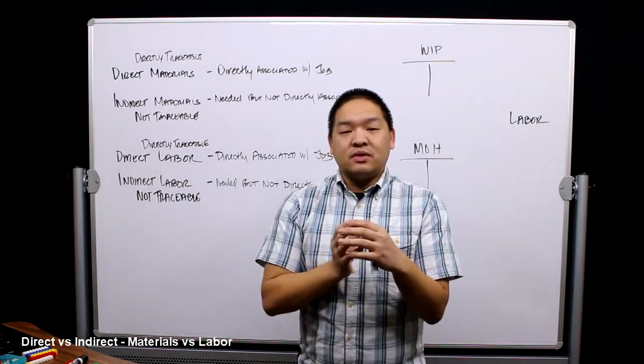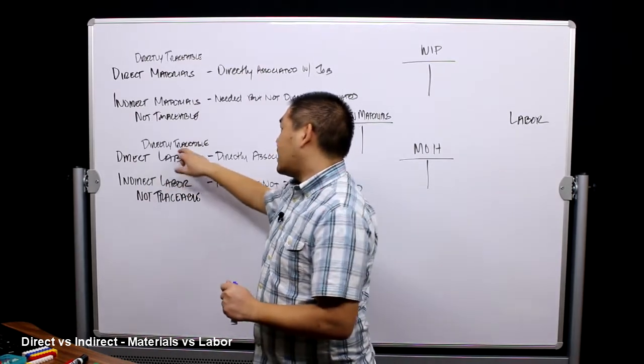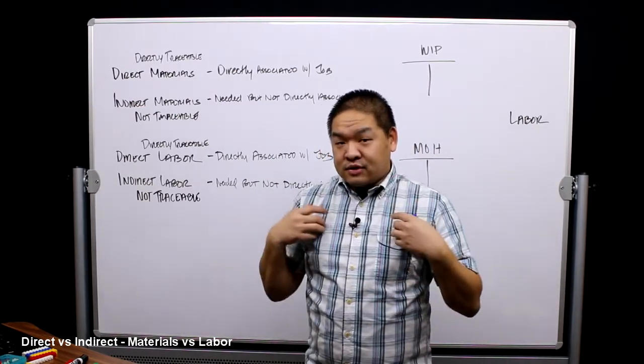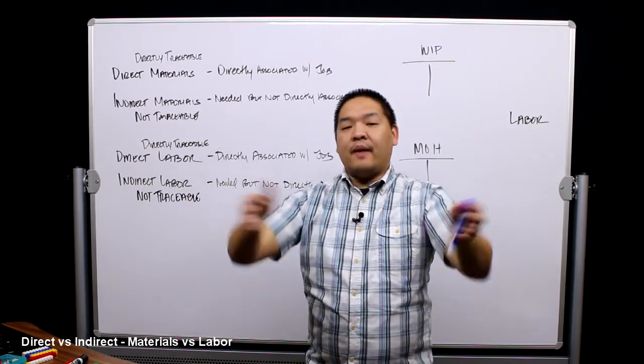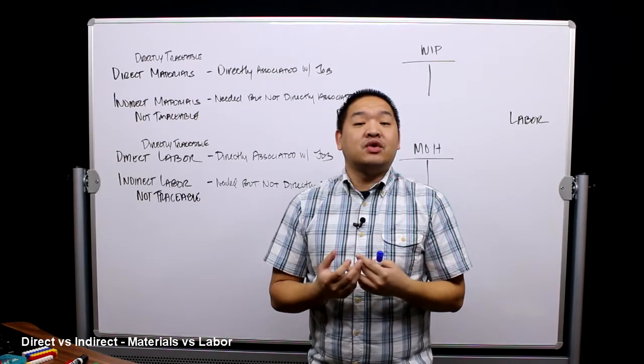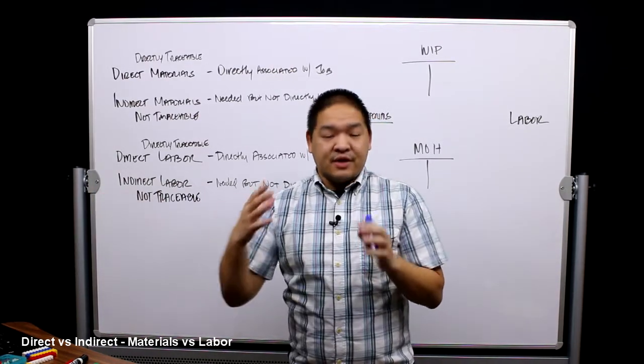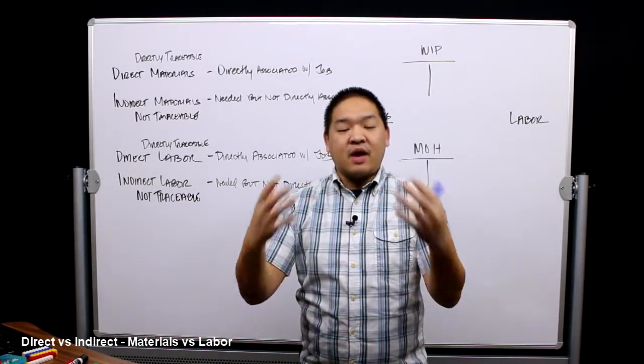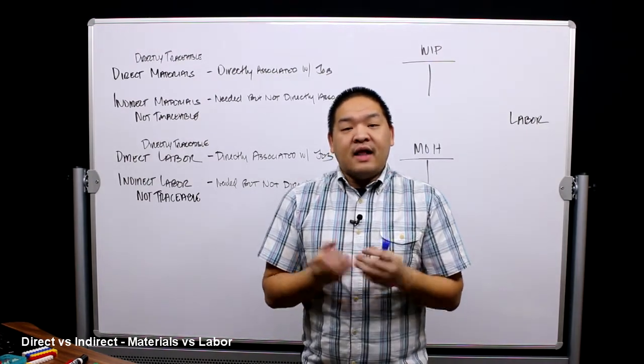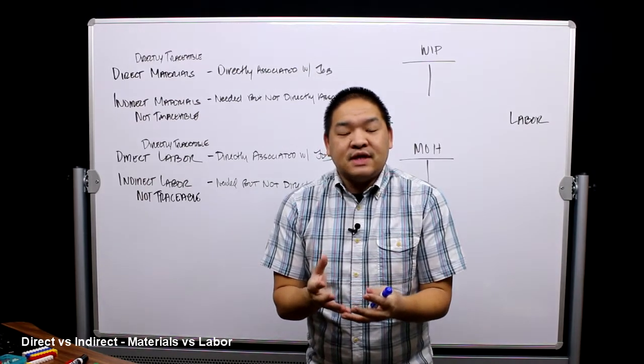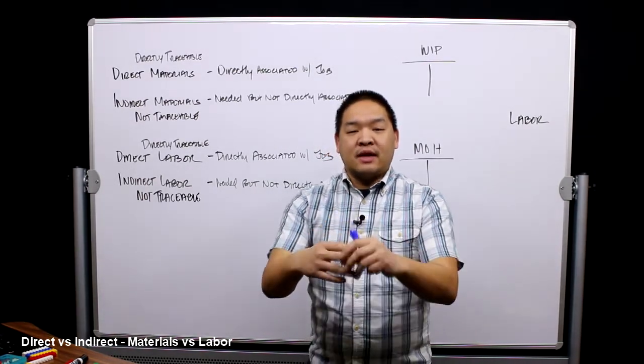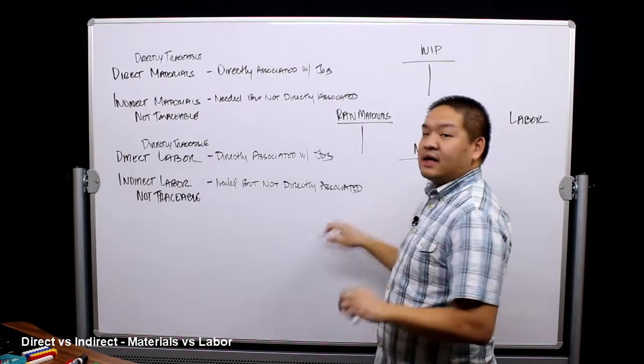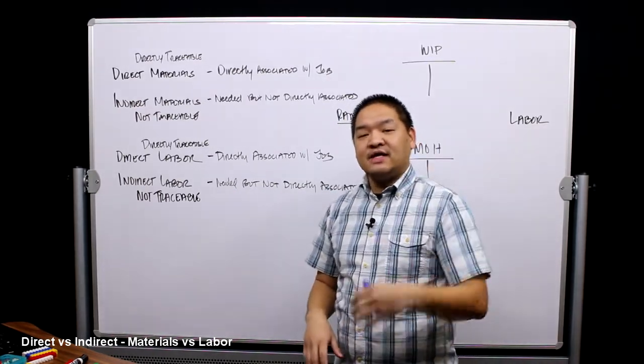Now let's skip over to labor. Direct labor is labor that's directly traceable or directly associated with a job. So if I am changing the oil, I'm directly associated with the changing of the oil. This may be different from a supervisor who oversees a whole bunch of mechanics. Their job is to oversee the mechanics to make sure the jobs are running on time, on schedule, and there aren't any problems. Because of that, they aren't associated with the job because they're just overseeing me. Therefore, they're called indirect labor. They are not traceable to a job, so they're needed but not directly associated with the job.